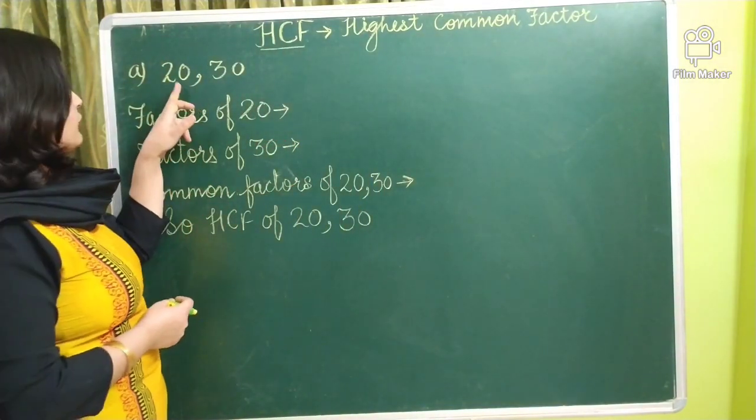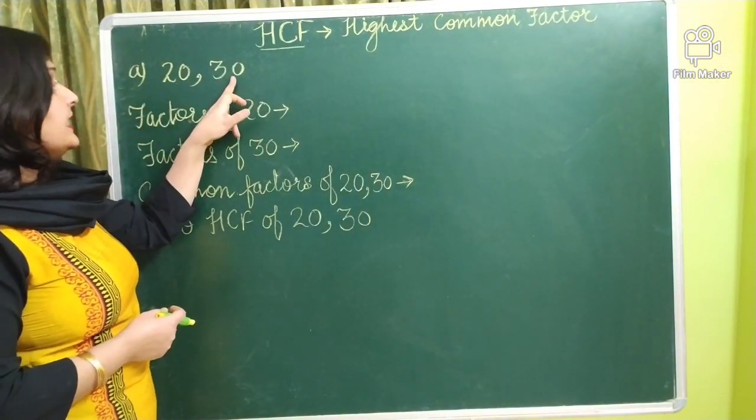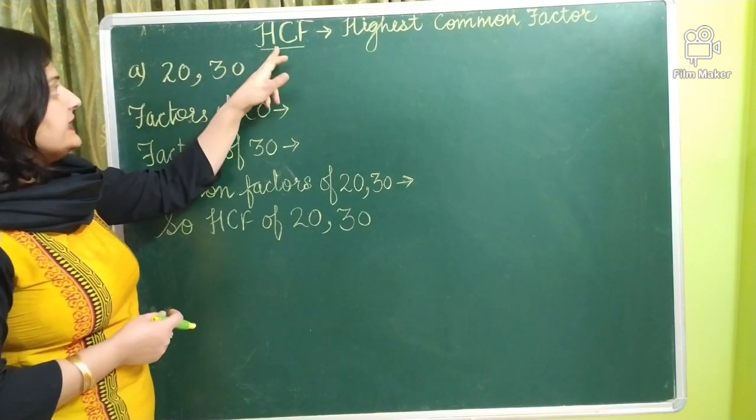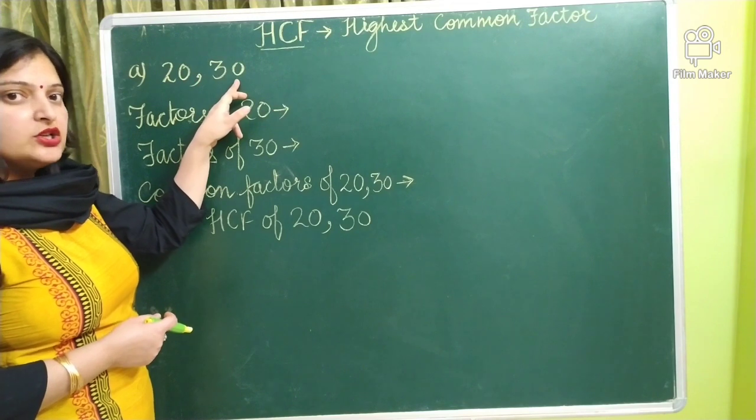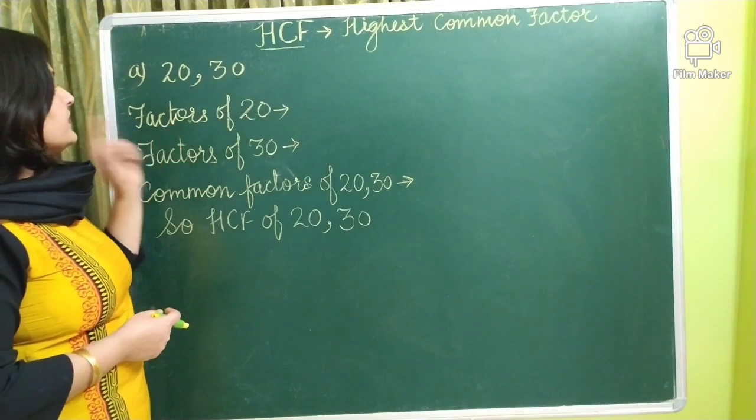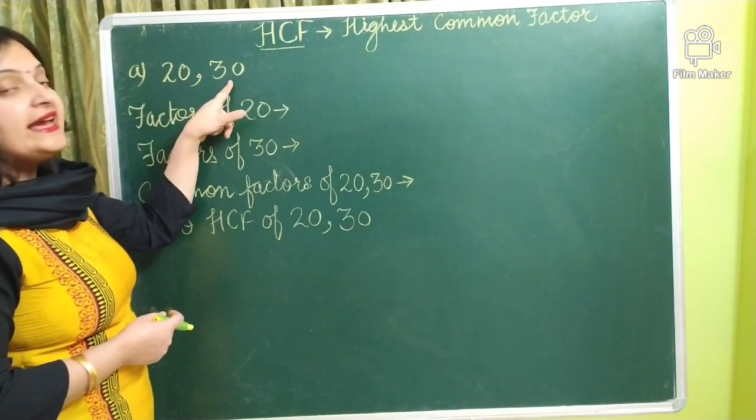I have taken an example of 20 and 30 and we have to find highest common factor of 20 and 30. So for this what we will do? We will find the factors of 20 and 30.